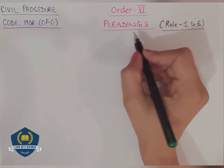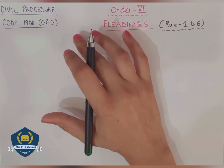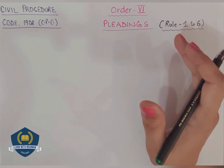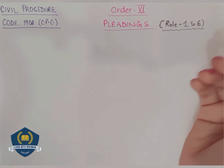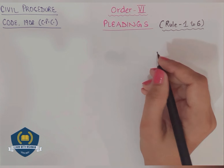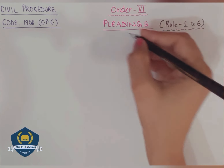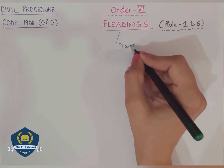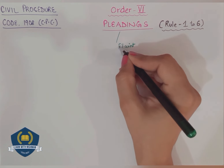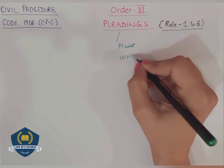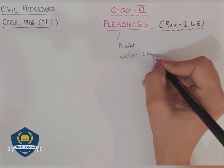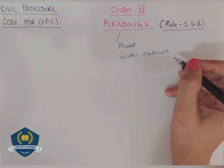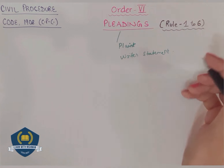So Order 6 - Pleadings of Civil Procedure Code. What do you understand by pleadings? First of all we have to understand this. Pleadings shall mean plaint or written statement. When the plaintiff writes his plaint on a document, or files a written statement - combining both together, we call it pleadings. So any plaint or written statement will be considered a pleading.